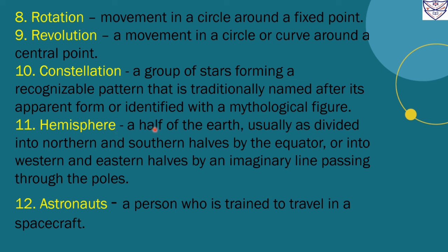Number 11. Hemisphere. A half of the earth, usually as divided into northern and southern halves by the equator, or into western and eastern halves by an imaginary line passing through the poles.